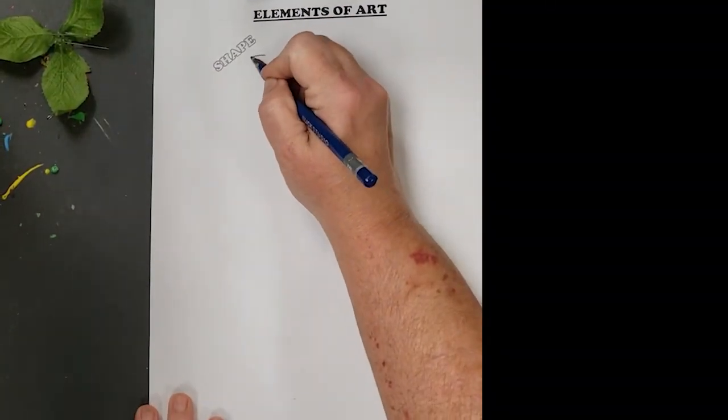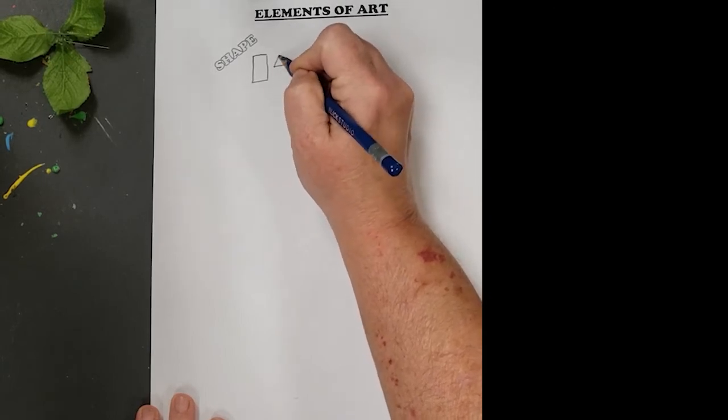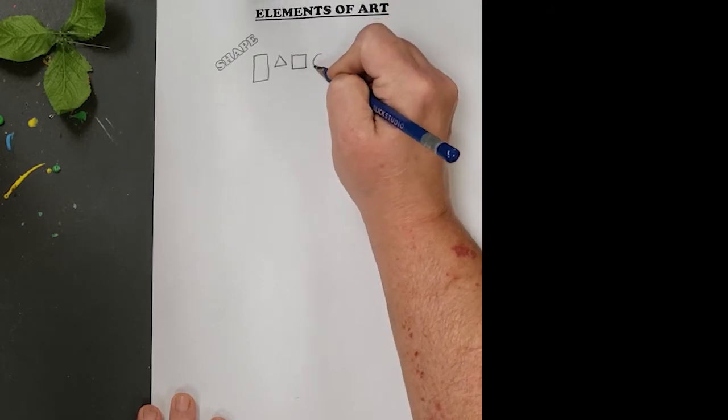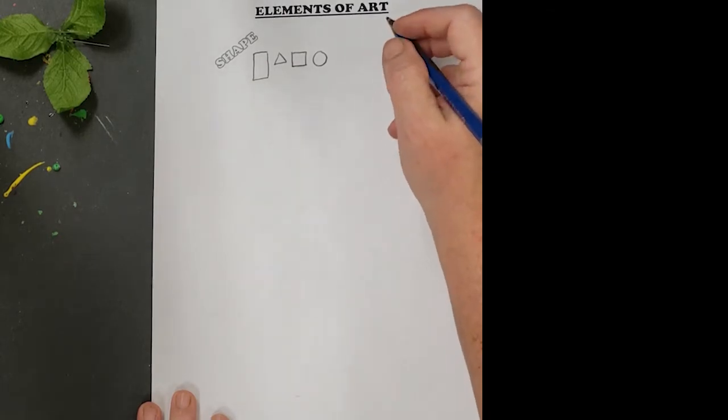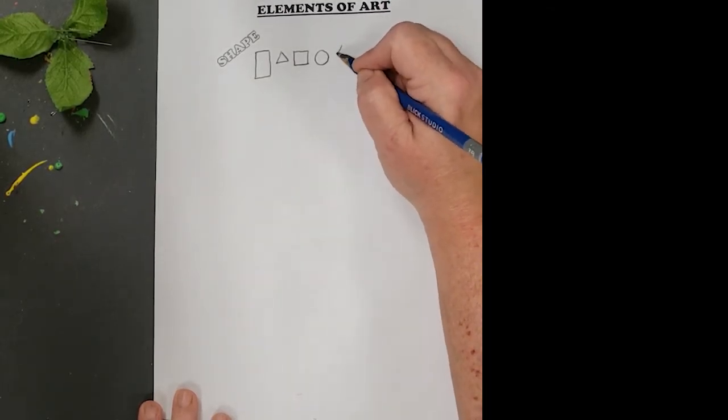Okay, shapes. Let's make a rectangle. We'll draw a triangle, a square, and a circle, and there we have some shapes, so we're done, right? No, we're not done quite yet, so let's make some more shapes.